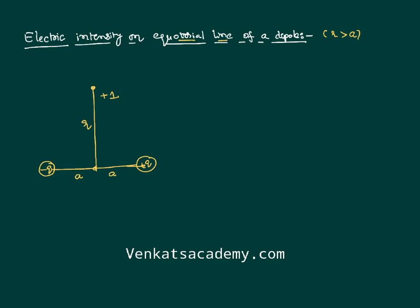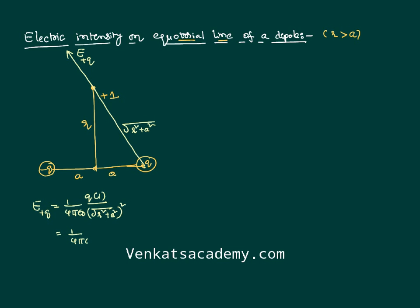Let us imagine a unit positive charge and identify the forces acting on it. The positive charge plus q applies a force of repulsion on the unit positive charge. This is the intensity due to plus q. Using Coulomb's inverse square law: E = 1/(4πε₀) · q/(r² + a²), since the distance from plus q to point B is √(r² + a²).